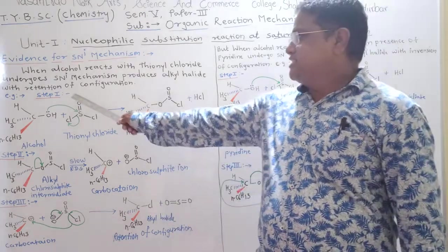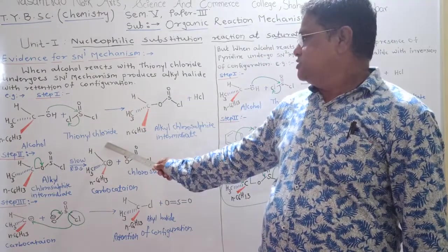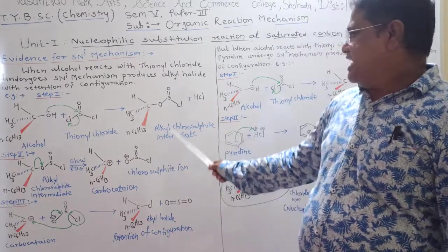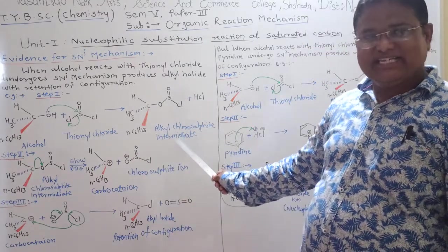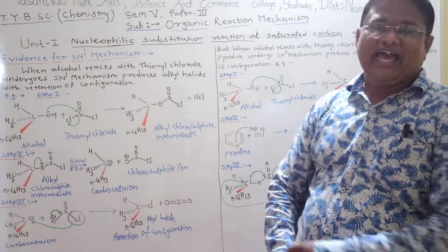Step 1. Alcohol reacts with thionyl chloride to form alkyl chlorosulphite as an intermediate and HCl as a product.